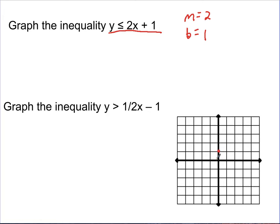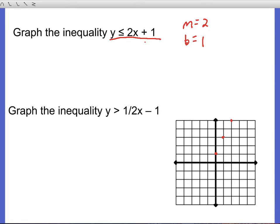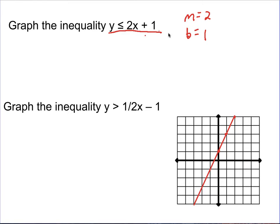We mark the y-intercept at 1, then go up 2 and right 1 for the slope. We look at the symbol to know what type of line we need — whether it's a solid line or a dashed line. Since it has the equal sign, it needs to be a solid line when we graph it.